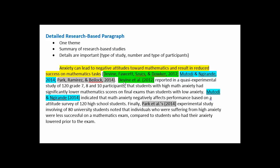In this first case, Devine reported in a quasi-experimental study — that's the type of study — of 120 participants, who were in grades 7, 8, and 10. So we get a good idea of what this was about: that students with high math anxiety had significantly lower mathematics scores on final exams than students with low math anxiety. That's a good summary of that study.